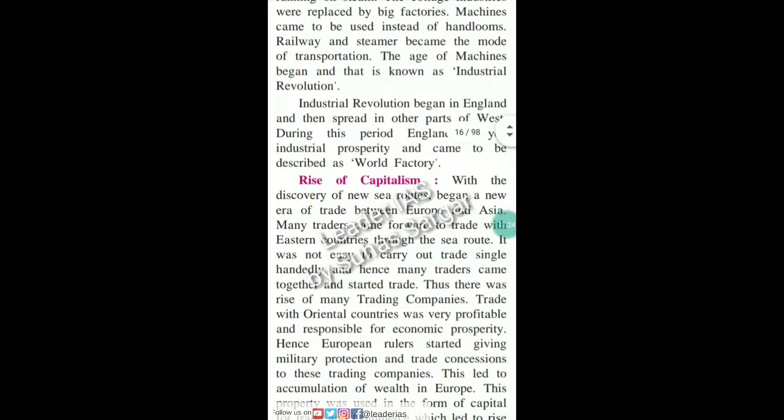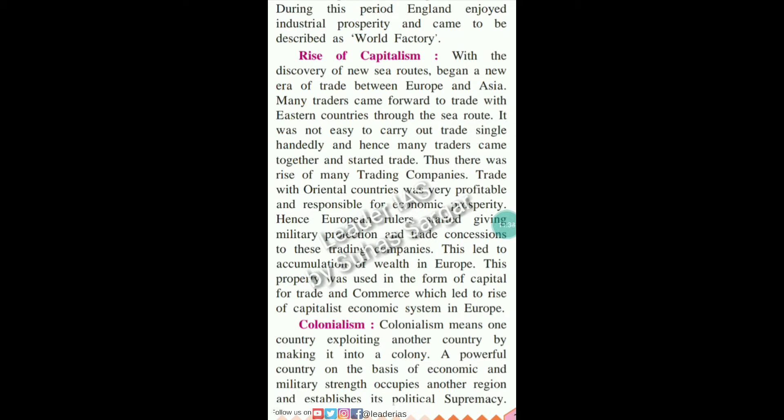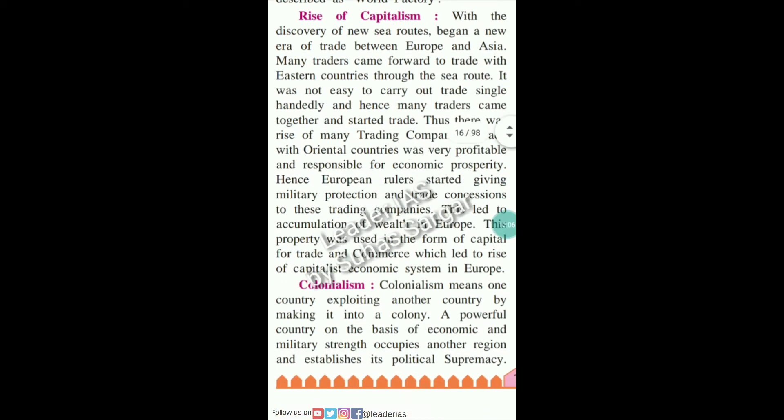With the discovery of new sea routes, a new era of trade between Europe and Asia began. Many traders came forward to trade with eastern countries through the sea route. Since it was not easy to carry out trade single-handedly, many traders came together and started trading, leading to the rise of many trading companies. Trade with oriental countries was very profitable and responsible for economic prosperity. Hence, European rulers started giving military protection and trade concessions to these trading companies. This led to the accumulation of wealth in Europe, which was used as capital for trade and commerce, leading to the rise of the capitalist economic system in Europe.